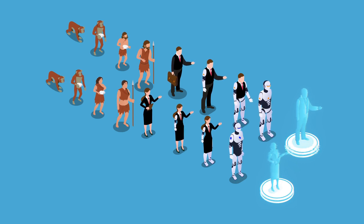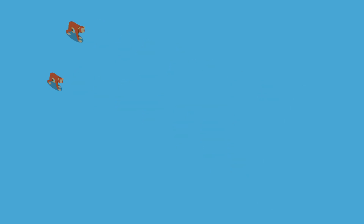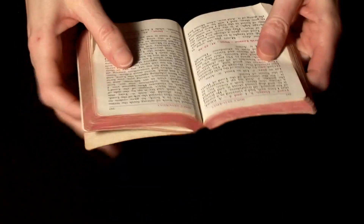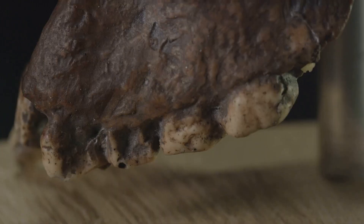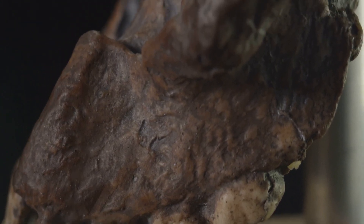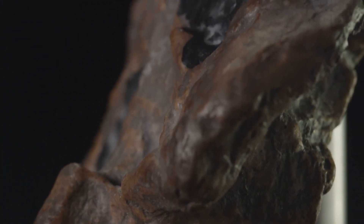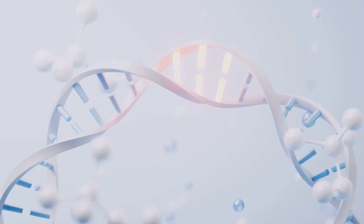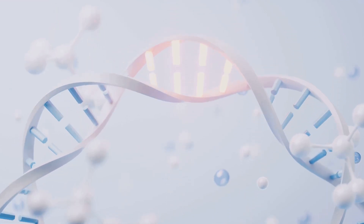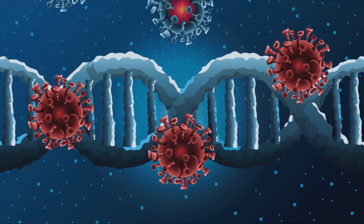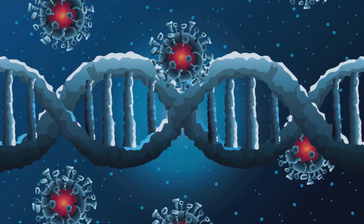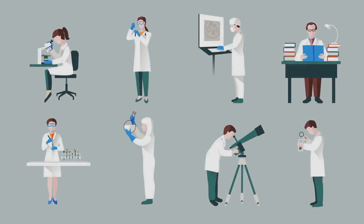Darwin's theory of evolution by natural selection profoundly challenged existing beliefs about the origins of life and the nature of species. Prior to his work, many people adhered to creationist views that posited species were unchanging and divinely created. Darwin's ideas sparked intense debate not only within the scientific community, but also in religious and philosophical circles, prompting a re-evaluation of humanity's place in the natural world. The influence of Darwin's work extends far beyond biology — it has impacted genetics, ecology and anthropology. The discovery of DNA and the principles of heredity provided a genetic basis for natural selection, further validating Darwin's theories, while in ecology, understanding evolutionary processes helps scientists study species interactions and ecosystem dynamics.